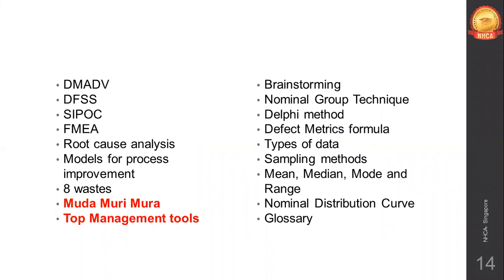Cover SIPOC — Supply, Input, Process, Output, Customer. Also cover FMEA (Failure Mode and Effects Analysis), root cause analysis, and models of process improvement. Know all eight different models found in Lean Six Sigma. Understand Muda, Muri, and Mura — don't get confused; be very thorough on the differences between them.